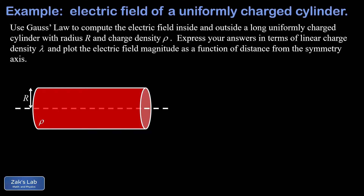We need our cylinder to technically be infinitely long in order to do the math, and then we view our results as an approximation that's valid when a cylinder is fairly long compared to our distance from the symmetry axis. This cylinder has a radius of big R and a volume charge density in coulombs per cubic meter that we call rho. Our goals are to find the electric field inside and outside the cylinder, express those results in terms of a linear charge density lambda in coulombs per meter, and then get a plot of the electric field magnitude as a function of distance from the symmetry axis.